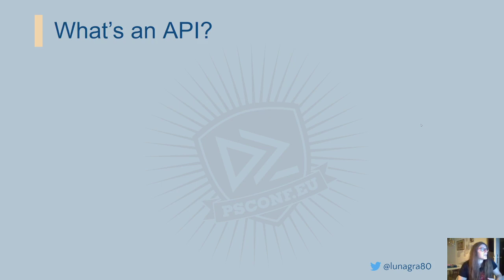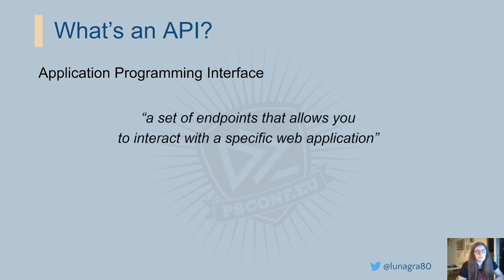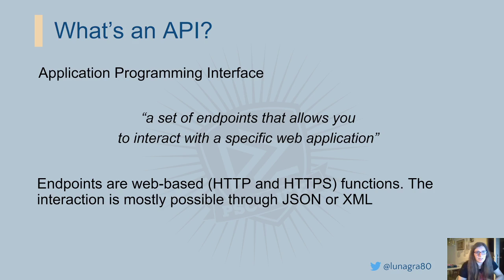Let's move to what is an API. For a few years I've been using APIs and I never looked into the theory of it. When I started preparing this presentation, I went online looking for enlightenment and went down a rabbit hole. This topic is so broad. So I decided to focus on the kind of APIs used in web applications. The acronym API stands for Application Programming Interface, and the definition I found most appropriate is: a set of endpoints that allows you to interact with a specific web application, where endpoints are a set of dedicated URLs.